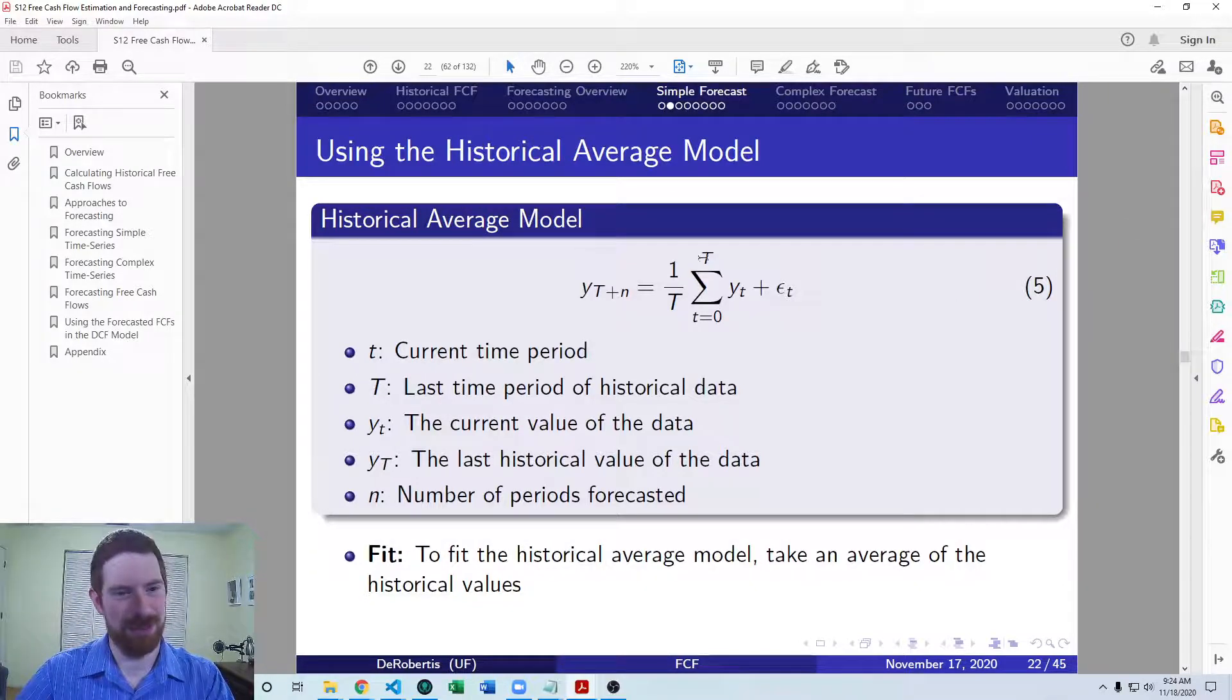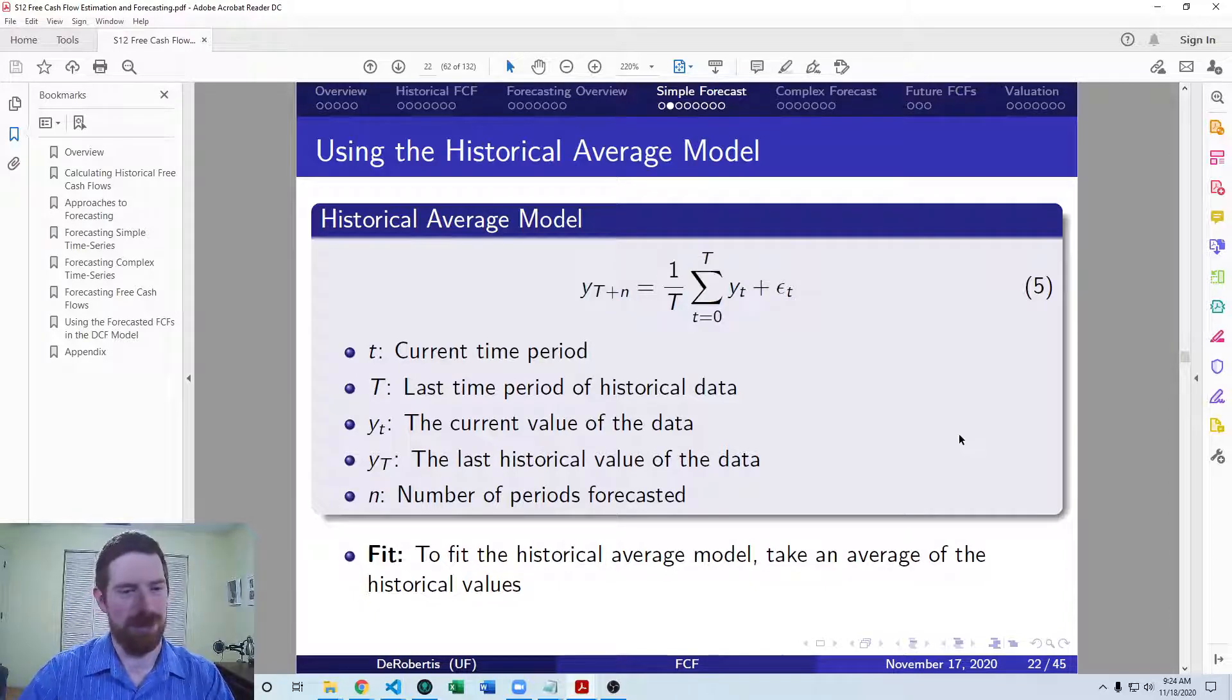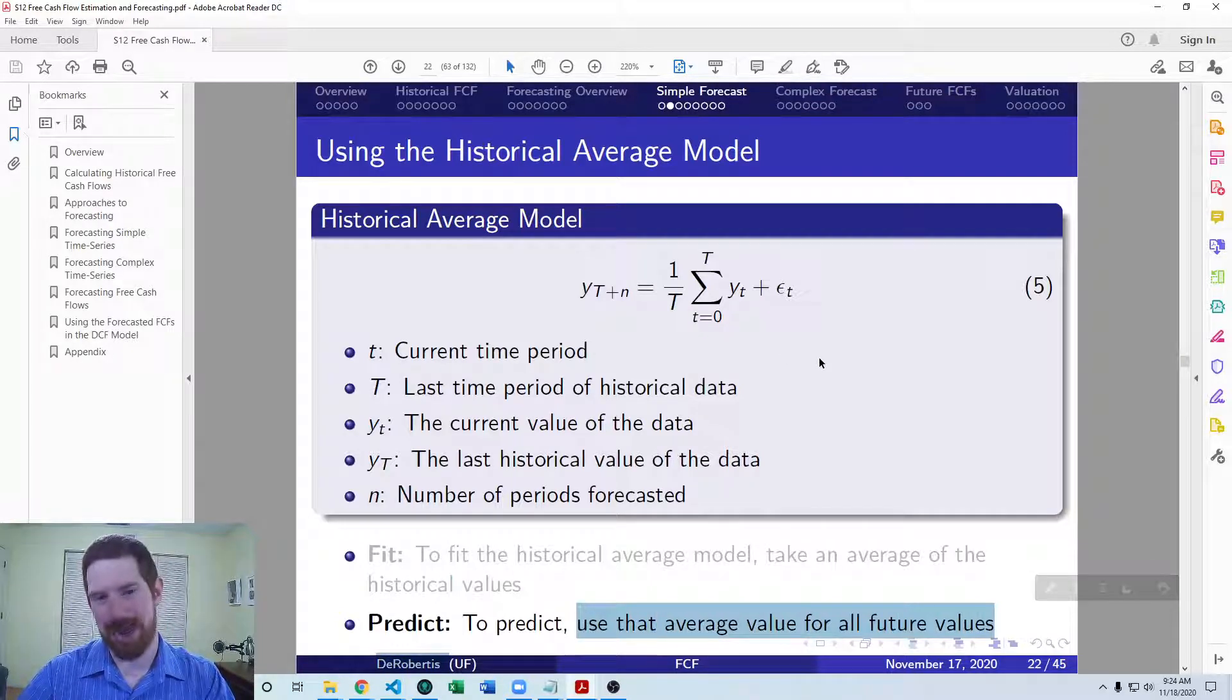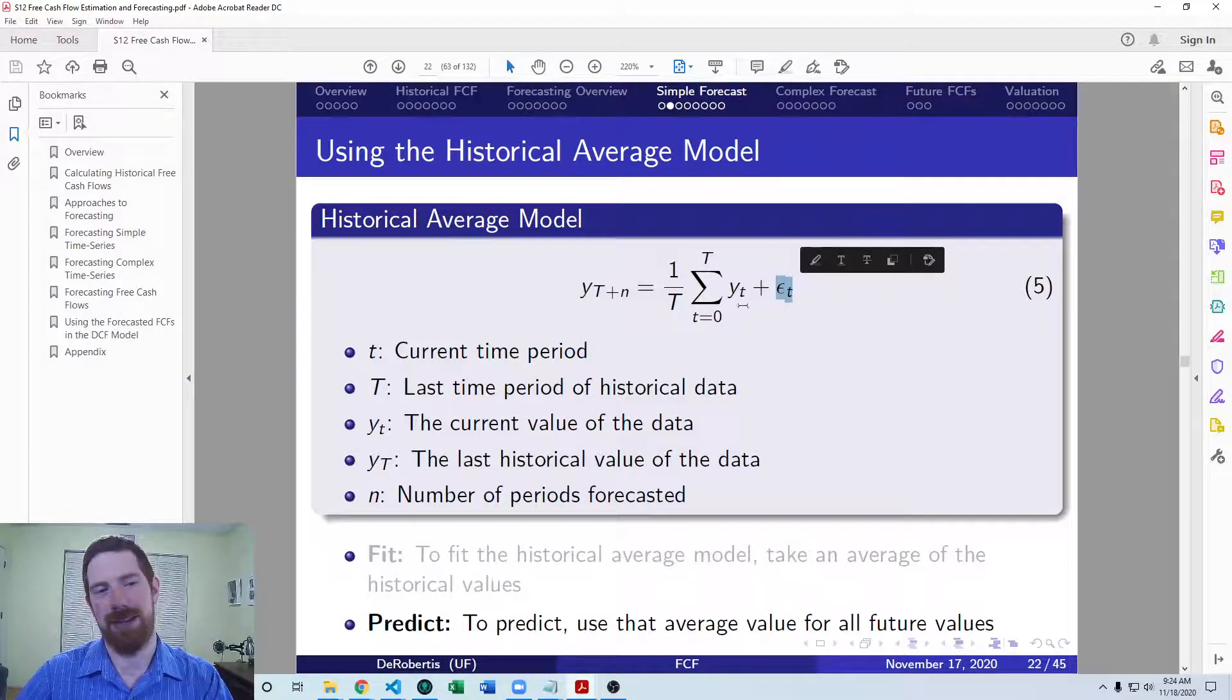It's just taking each n period in the historical data, summing them up, taking the average, and then using that average to predict all the future periods. So every future period is going to have the same value for its forecast, it's all at the average. This epsilon here just represents the error in the forecast that you're never going to be able to forecast things perfectly.